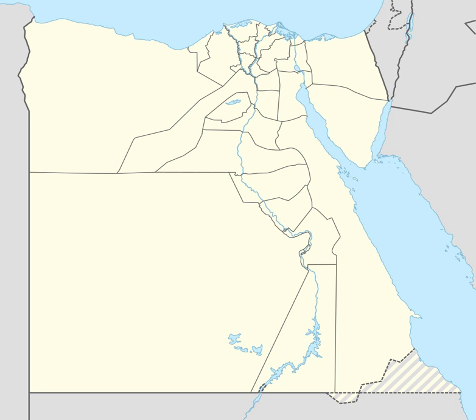In Arabic, inhabitants of Upper Egypt are known as Sa'idis and they generally speak Sa'idi Egyptian Arabic. In Ancient Egypt, Upper Egypt was known as Ta-Shema, literally 'The Land of Reeds' or 'The Sedgeland'. It was divided into 22 districts called nomes. The first nome was roughly where modern-day Aswan is, and the 22nd was at modern Atfih, just to the south of Cairo.